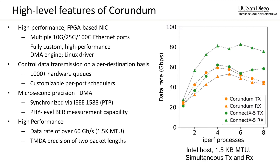We believe that improvement should be possible with further optimization of the device driver. Additionally, Corundum can provide TDMA precision of two packet lengths, either 1.5 KB MTU packets at 10G or 9 KB MTU jumbo frames at 100G. All of this is open source on our GitHub repository that is linked here.